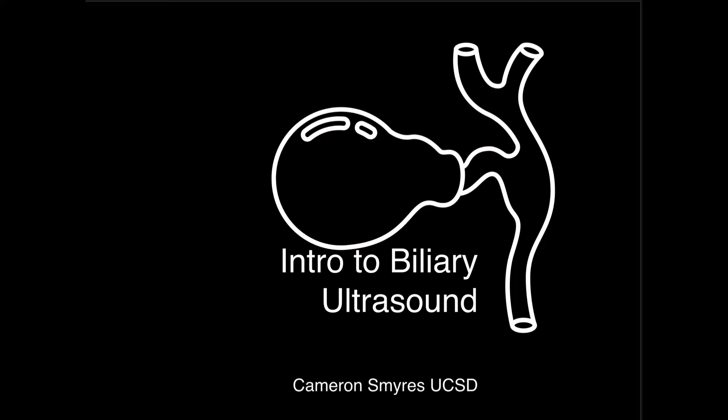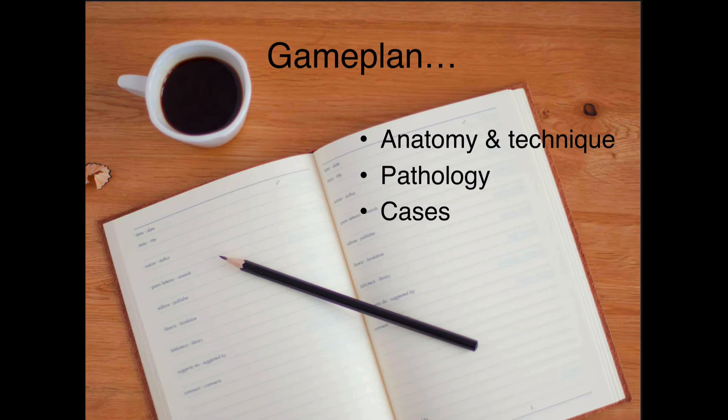Hi everybody. Welcome back to the intern orientation boot camp. We're going to speak right now about the right upper quadrant ultrasound or the biliary ultrasound, and just give you a brief introduction on how to find it and some pathologic structures. We'll first discuss the anatomy as well as the technique to most effectively locate the gallbladder, and then we'll look at some abnormal pathologies and discuss a few cases.